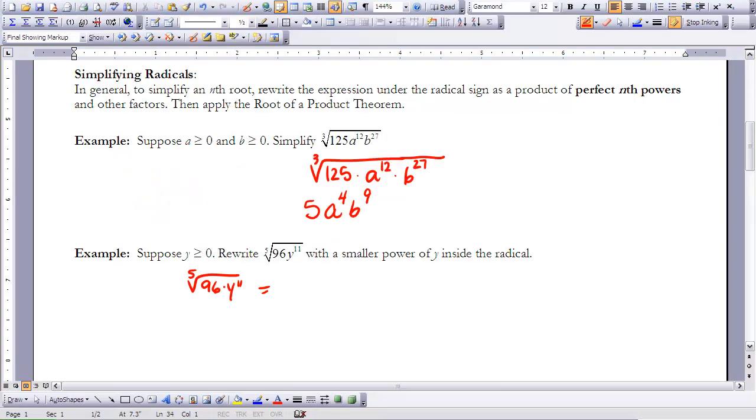We're going to look at the fifth root of 96y to the 11th. When we look at this, it's not going to be a perfect, clean answer. Not everything is going to come out from under the radical. So what I want to do is break things up under the radical into groups of fifths, or numbers that are going to be perfect fifth roots.